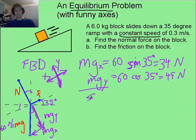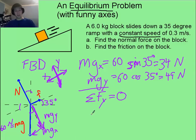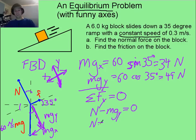Now, knowing that the sum of the forces in the y direction equals zero, we know the positive y's must equal the negative y's. We only have the normal force minus mg sub y equal to zero — in other words, N equals mg sub y. So the normal force must equal 49 Newtons.